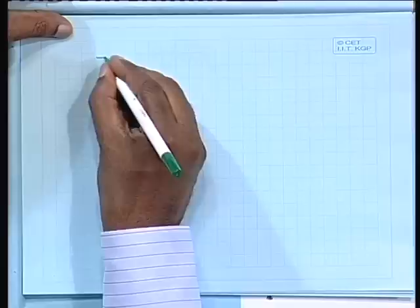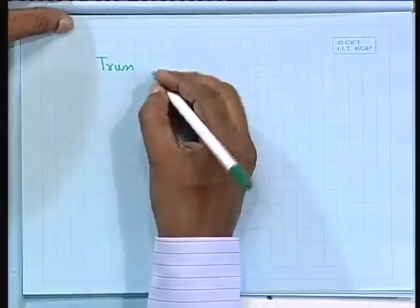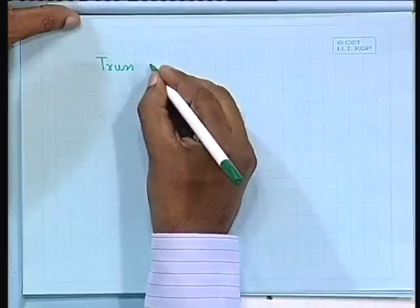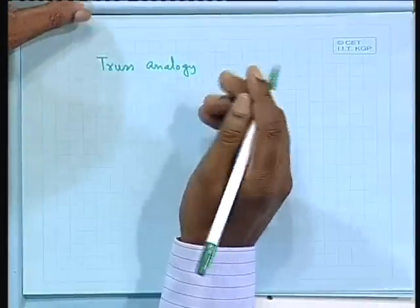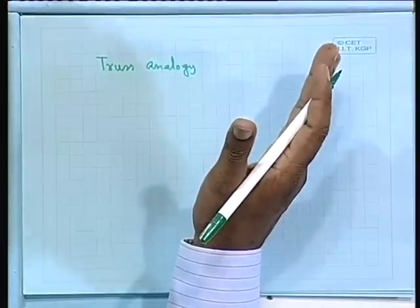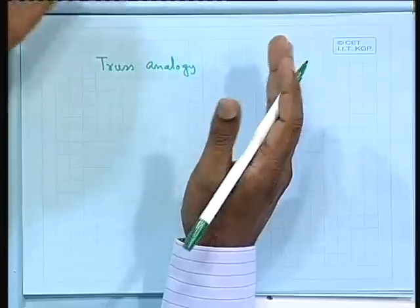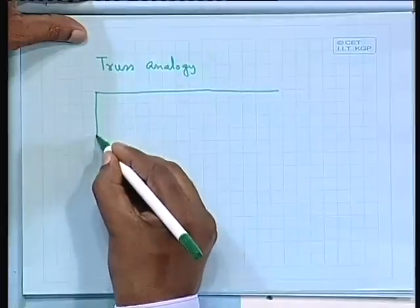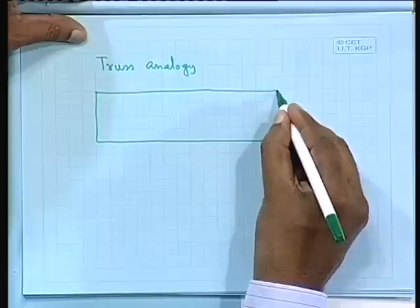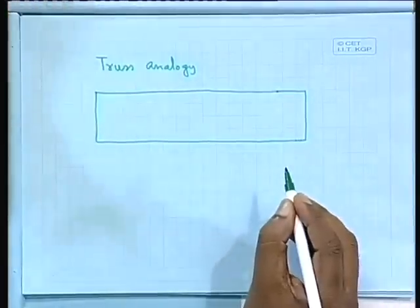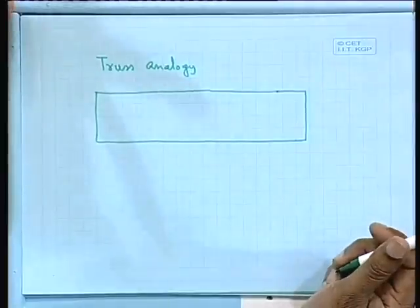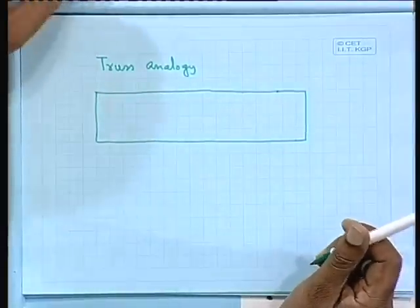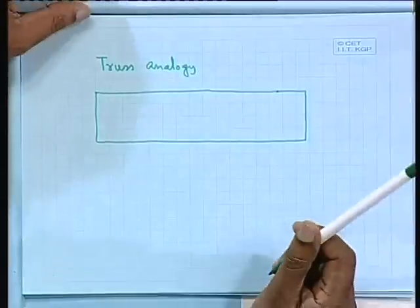Now let us discuss the truss analogy. Generally, from the beginning of design we call it the truss analogy — the stirrups we are providing are analogous to a truss. A truss is typically made of steel sections; railway bridges and factory sheds are examples of trusses.